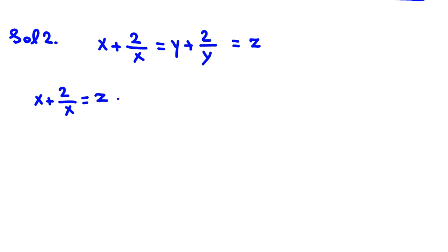You say x plus 2 over x equals y plus 2 over y. Suppose it is equal to z. Here, if we multiply by x, x squared plus 2 equals xz. So x squared minus xz plus 2 equals zero.